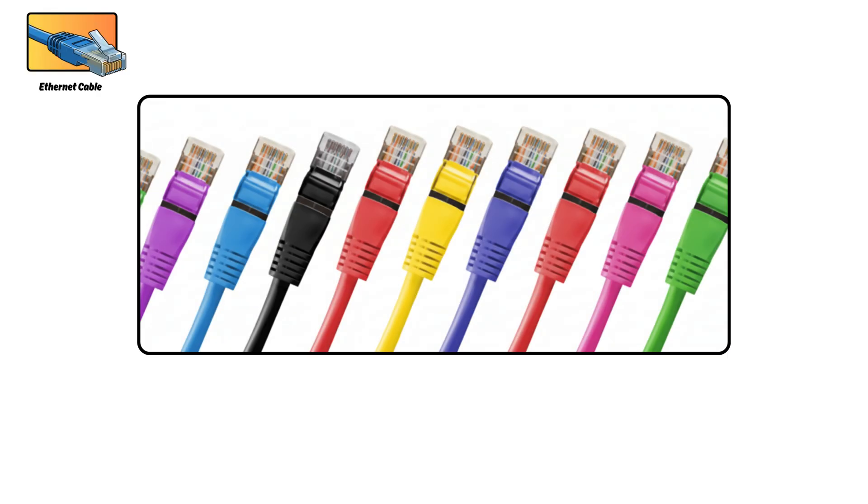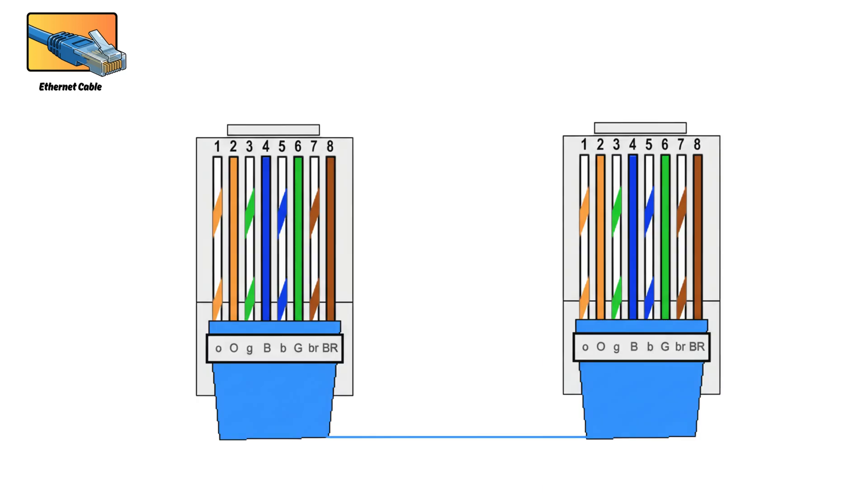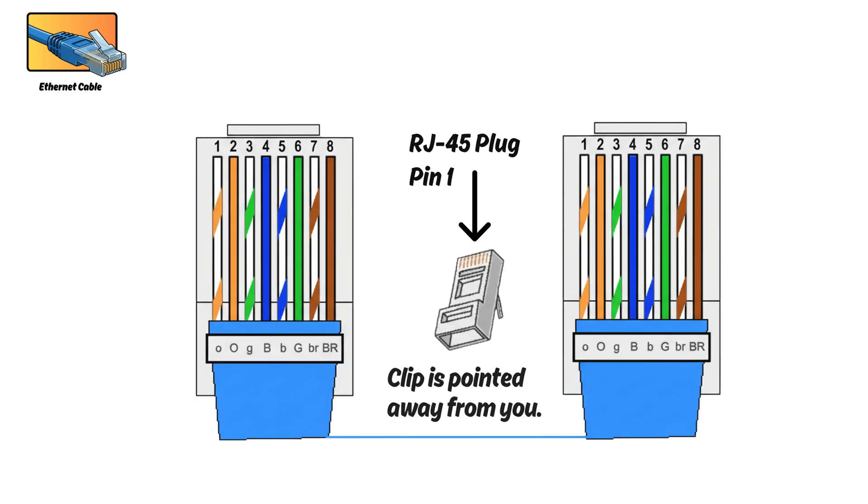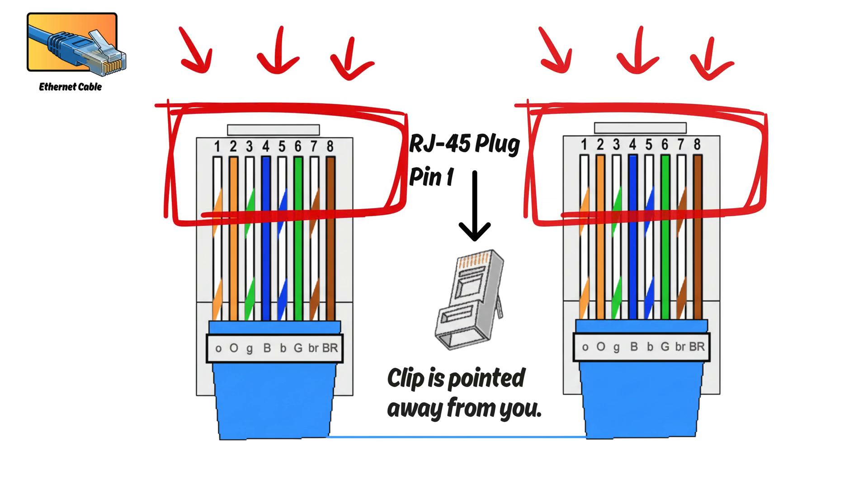Ethernet cables. Ethernet cables are the most common wired network cables you'll see at home and in offices. They use a connector called RJ45, and inside them you'll find twisted copper wires that help reduce interference, giving you stable and reliable speed.